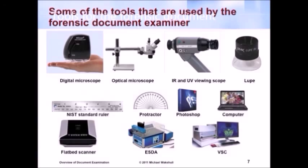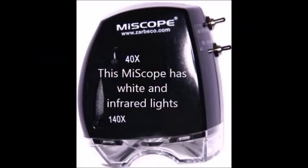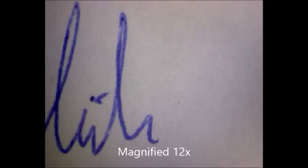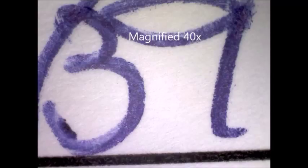Some of the tools that we use as document examiners include a digital microscope. This is an example of one, from a company called Zarbaco in New Jersey. It's called MyScope — a very high-end digital microscope with a lot of capabilities. It allows us to hold it over a document and capture the image right on the computer. Some of the images I'll be showing you were captured using that MyScope.